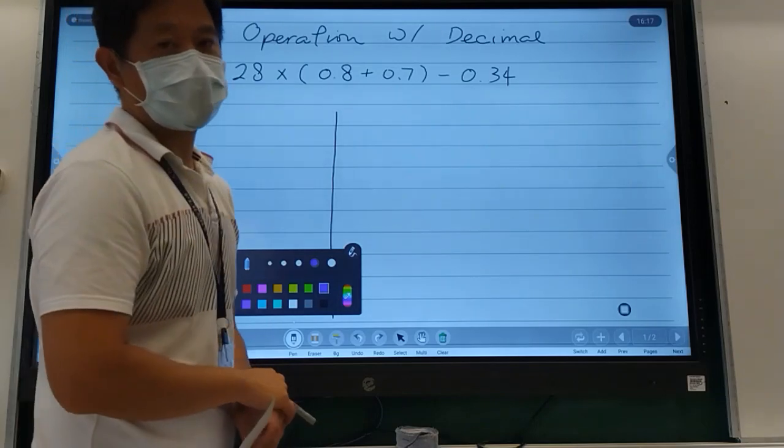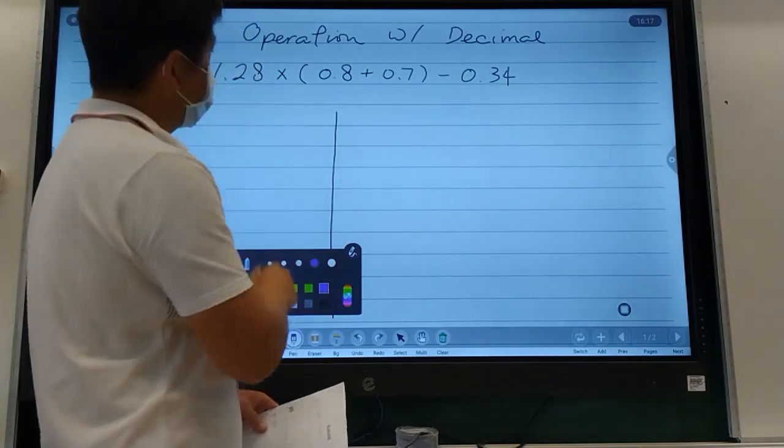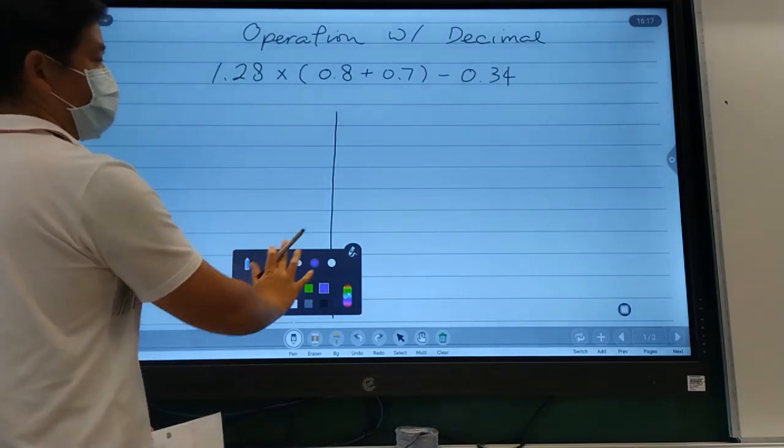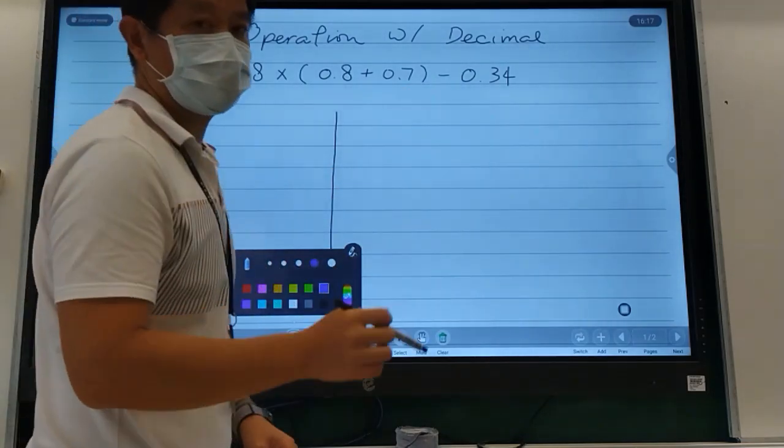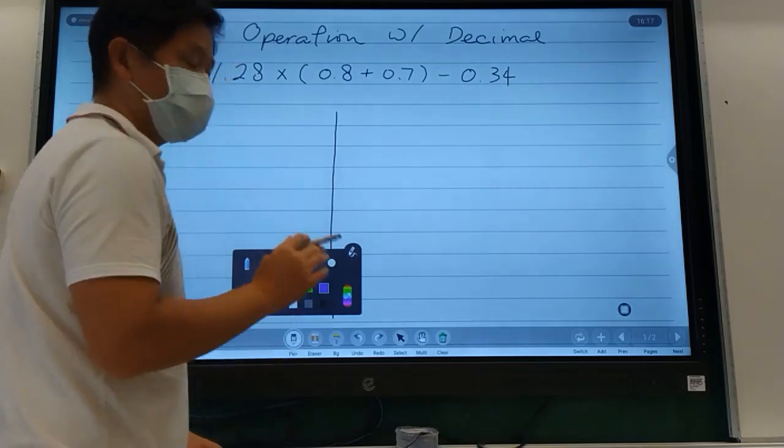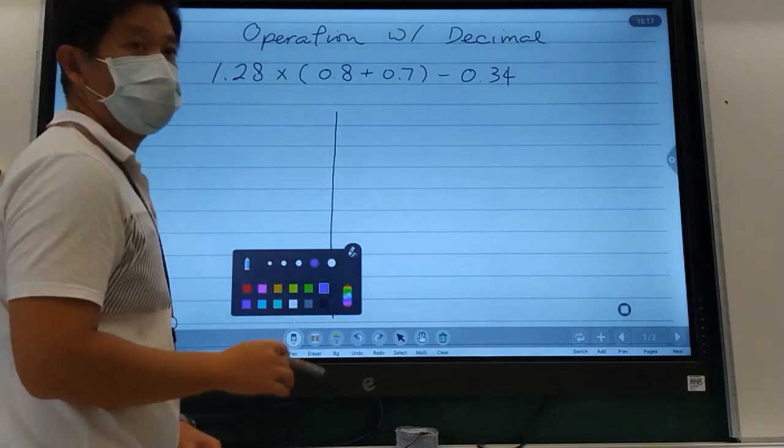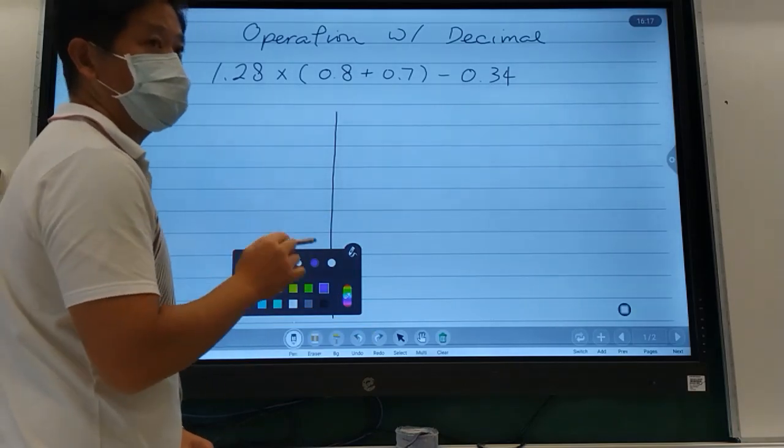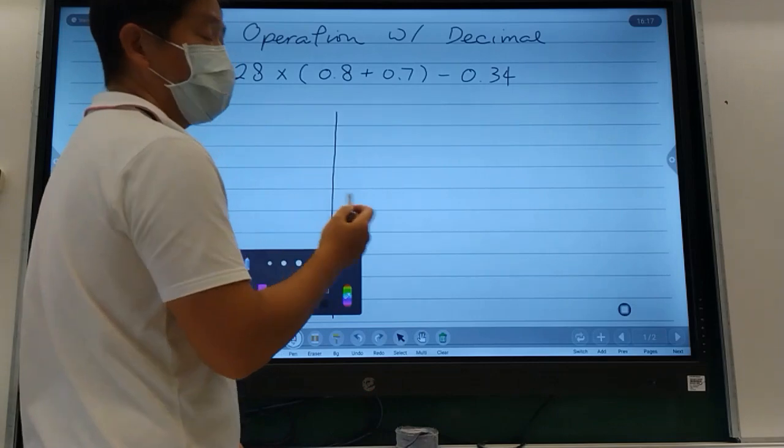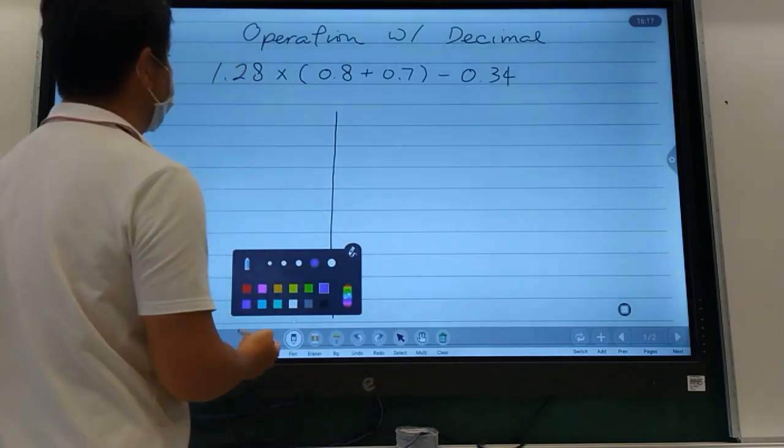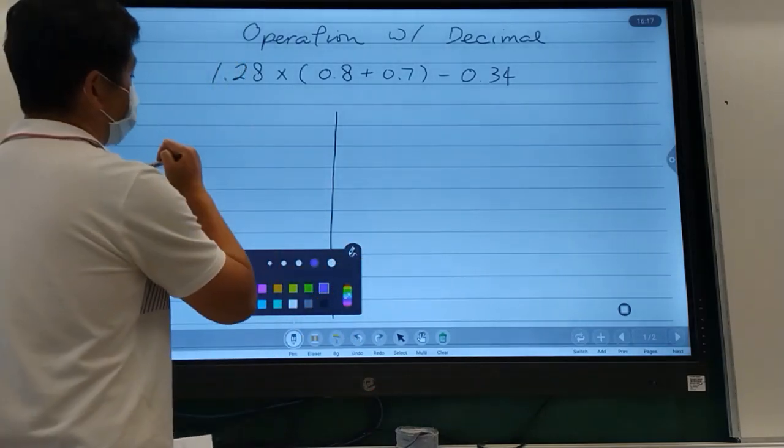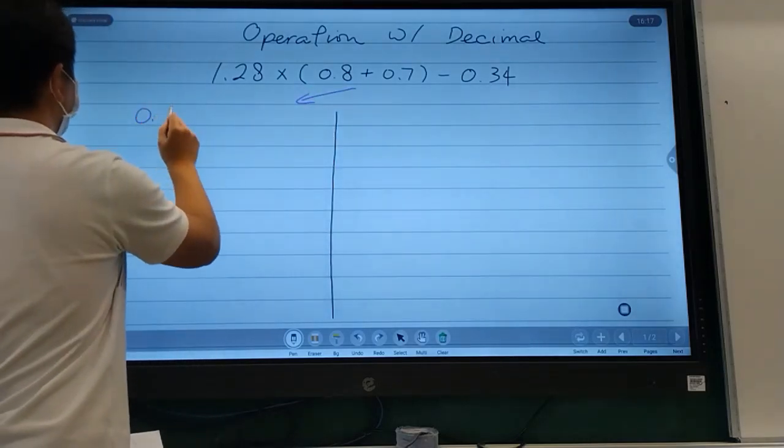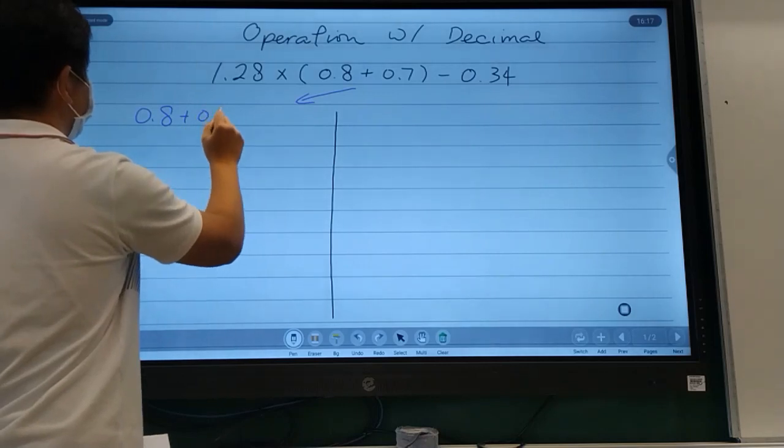Welcome back to Mr. Chan's math corner. Today we're going to work on some operations with decimals. We're going to try to make this side all decimal and this side all fraction to see if we have two different answers. BODMAS says I need to do bracket first, so 0.8 plus 0.7 equals 1.5.